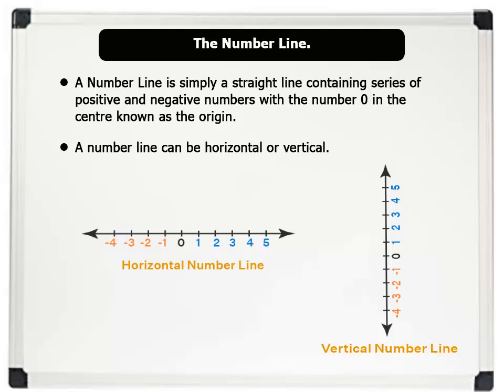Also to locate a point in a vertical number line we start from the origin zero. Movement can either be up which is positive or down the origin which is negative.